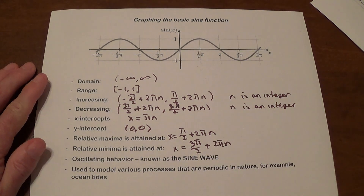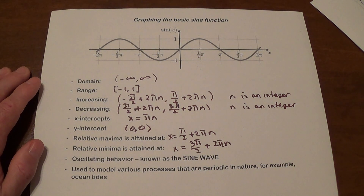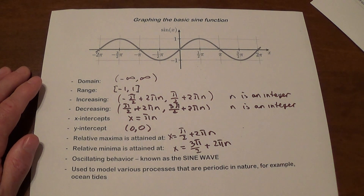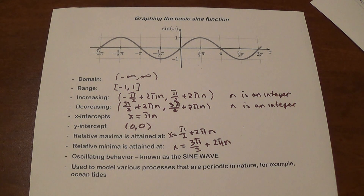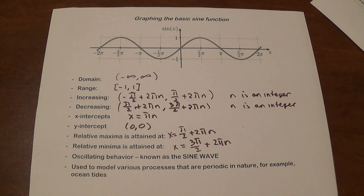This graph is known as a sine wave or a sine curve. Many processes in the real world that involve periodic behavior — like, for example, ocean tides — it's going to be possible to use the same function to describe such processes.